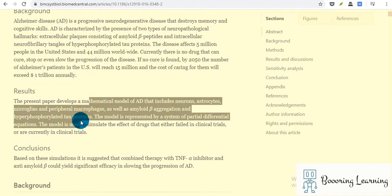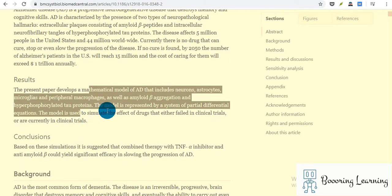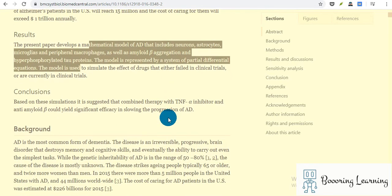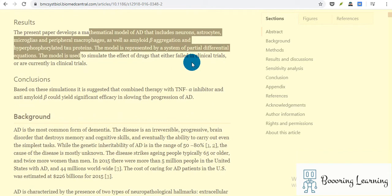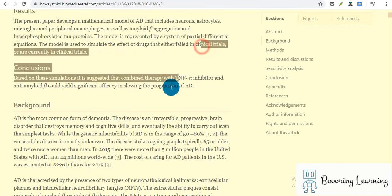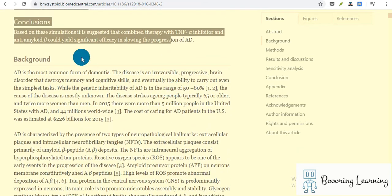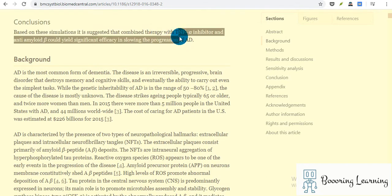That's interesting. The paper develops a mathematical model of Alzheimer's disease that includes neurons, astrocytes, microglia, and peripheral macrophages, as well as amyloid beta aggregation and hyperphosphorylated tau proteins. The model is represented by a system of partial differential equations. Some of them are drugs that failed or are currently used in clinical trials. As a conclusion, combined therapy with TNF alpha inhibitor and anti-amyloid beta could yield significant efficacy in slowing the progression of Alzheimer's disease.